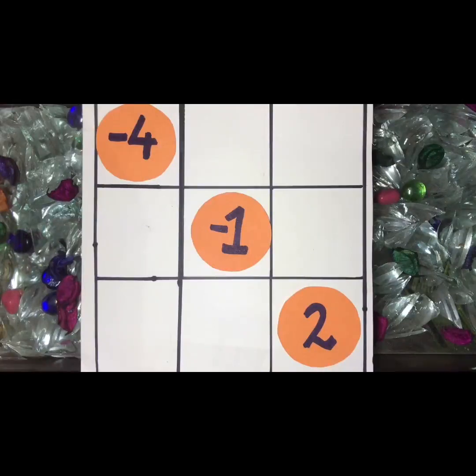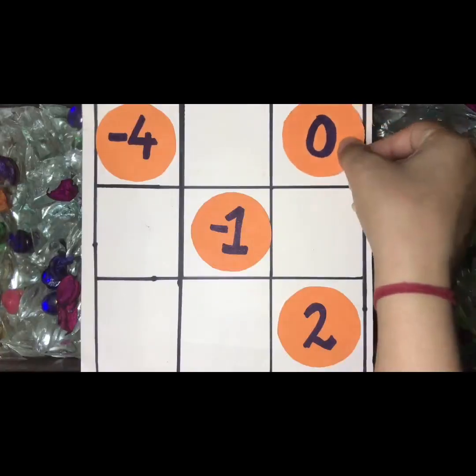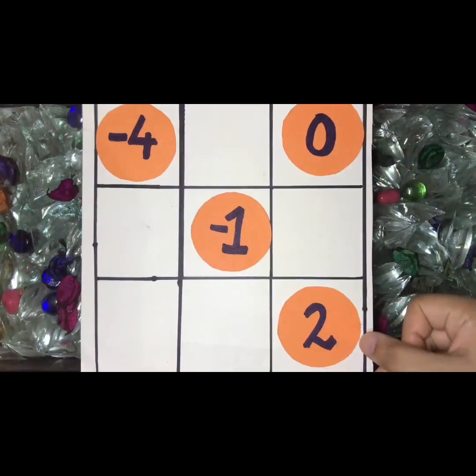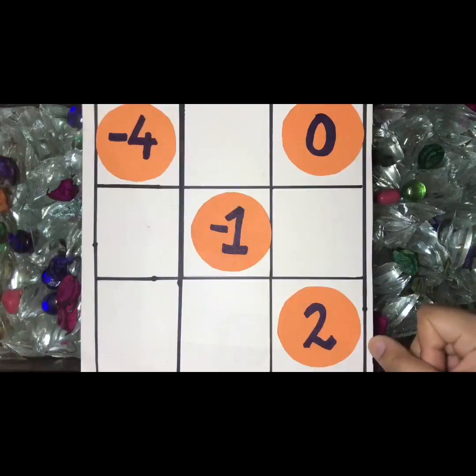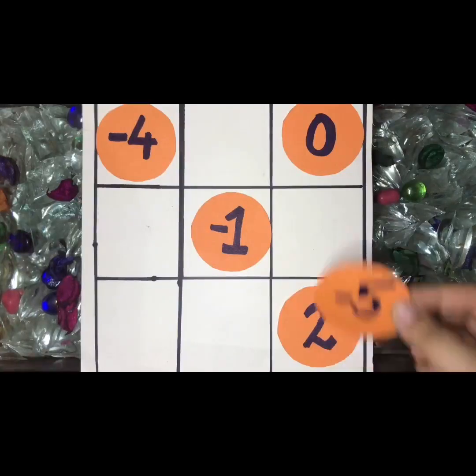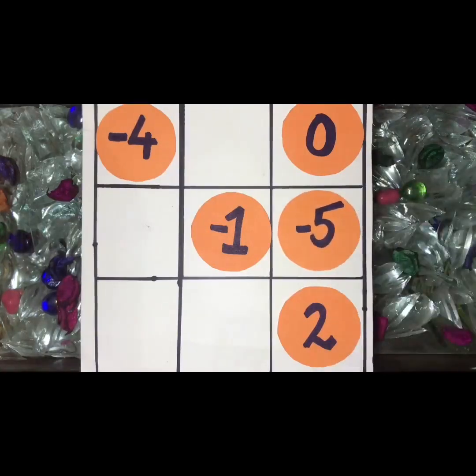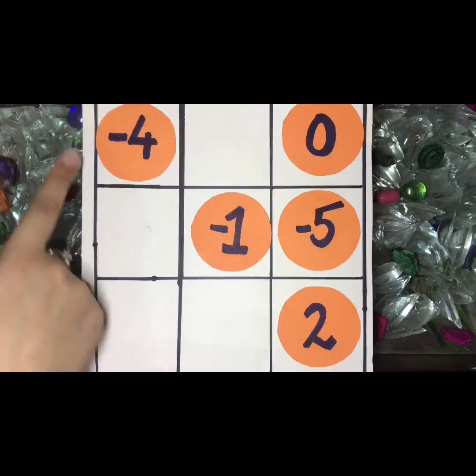Similarly, I'll take 0 and place it here. Now 0 plus 2, the answer is 2. For getting the answer minus 3, I need minus 5 here. So I'll keep minus 5.